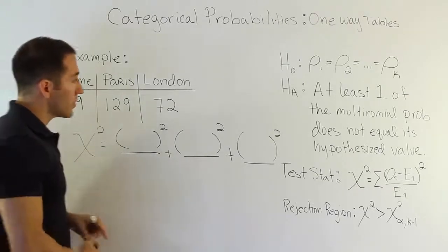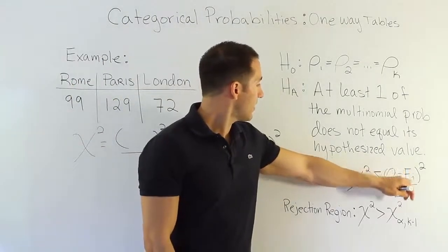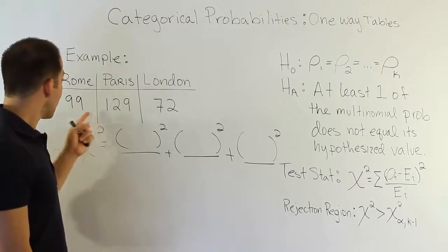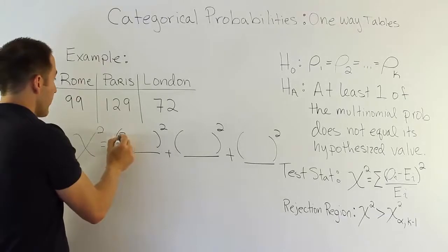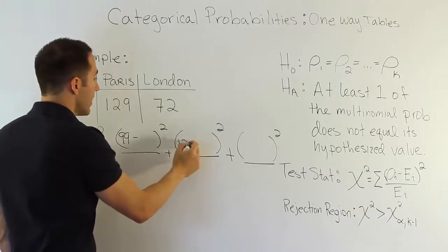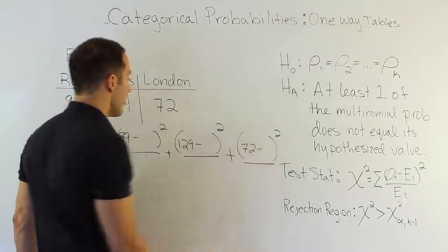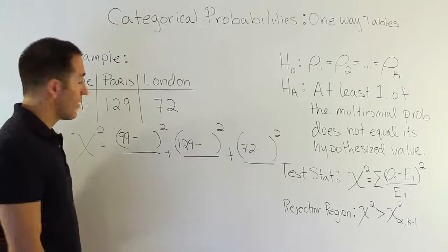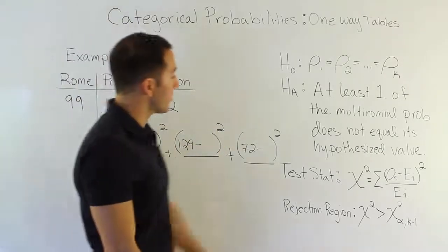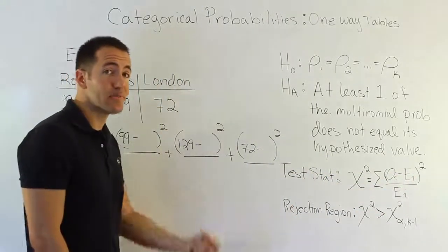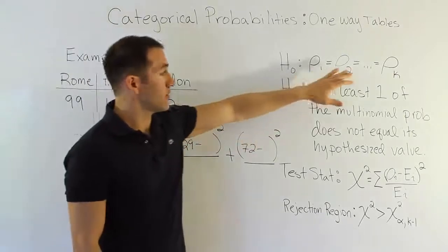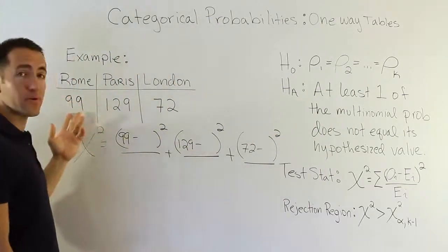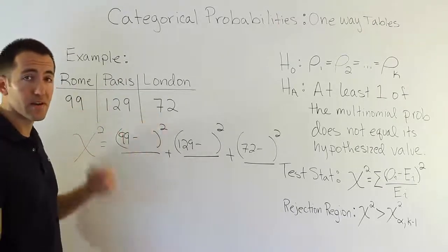The notation in these fractions is (O_i − E_i)² / E_i. O sub i is the observed value — what you see in the original data. So the observed value for Rome is 99, for Paris is 129, and for London is 72. E sub i is the expected value — what you expected to happen. Since we expected one-third of the 300 people to choose each city, we expected all three to be equal.